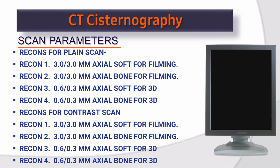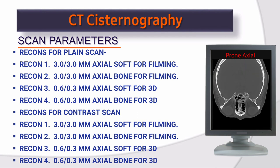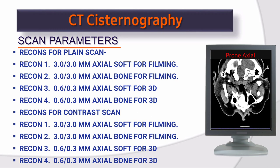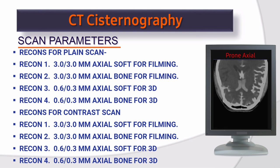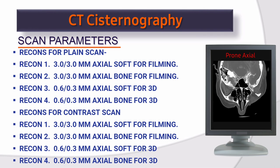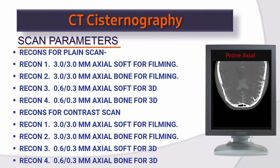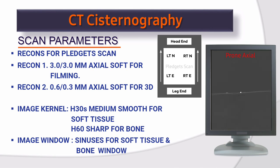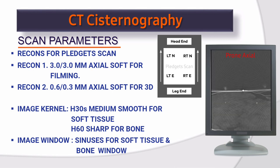Reconstructions for plain scan — Recon 1: 3×3 mm axial soft for filming. Recon 2: 3×3 mm axial bone for filming. Recon 3: 0.6×0.3 mm axial soft for 3D. Recon 4: 0.6×0.3 mm axial bone for 3D. Reconstructions for contrast scan — Recon 1: 3×3 mm axial soft for filming. Recon 2: 3×3 mm axial bone for filming. Recon 3: 0.6×0.3 mm axial soft for 3D. Recon 4: 0.6×0.3 mm axial bone for 3D. Reconstructions for pledget scan — Recon 1: 3×3 mm axial soft for filming. Recon 2: 0.6×0.3 mm axial soft for 3D.